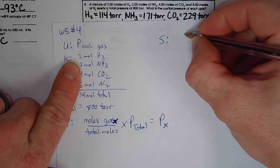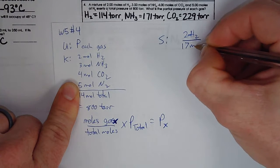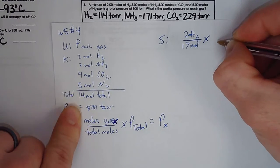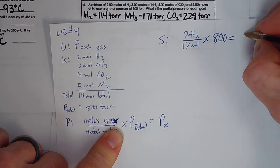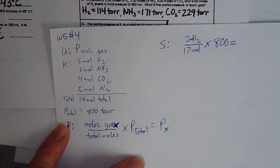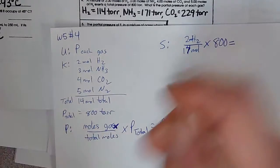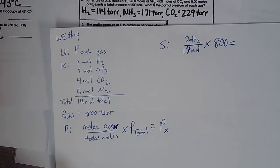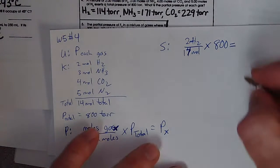And the total, while I'm here, 5 plus 5, so 14 moles total. And P total is 800 torr. Now if we apply that equation, so moles of gas X over total moles times total pressure equals the pressure of gas X. So we're going to apply that to this situation. Let's do that in our solve. So first for hydrogen, there's two moles of hydrogen, and there's 14 moles total. And the total pressure is 800 torr. And that will give us 2 divided by 14 times 800.